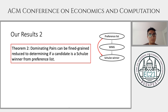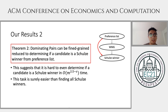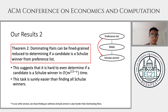Even though it's hard to compute the weighted majority graph more efficiently, it might be possible to compute a Schultz winner from the preference list without computing the weighted majority graph. But our second theorem says that even without computing the weighted majority graph, the algorithm cannot be much more efficient. We show a reduction from dominating pairs to determining if a candidate is a Schultz winner from the preference list, suggesting it is hard to determine if a candidate is a Schultz winner in O(m^{2.5−ε}) time. Note that determining whether a given candidate is a Schultz winner is easier than finding all Schultz winners. In our arXiv version, we also show that dominating pairs can be reduced to finding an arbitrary Schultz winner.